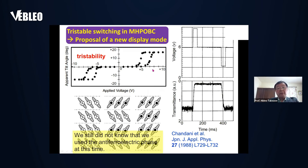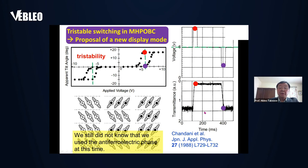In this paper, we also proposed a display application. By applying a positive or negative voltage over the bias field, we can switch between these two positions, corresponding to transmittance changes. So this is the principle of the device application.